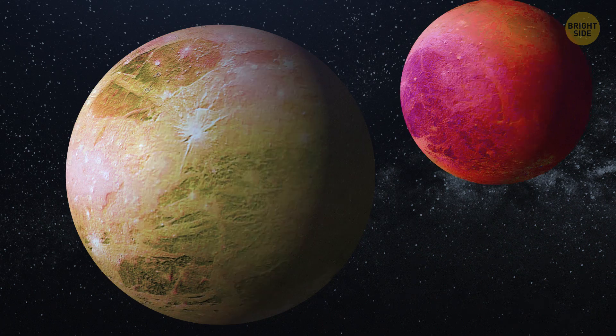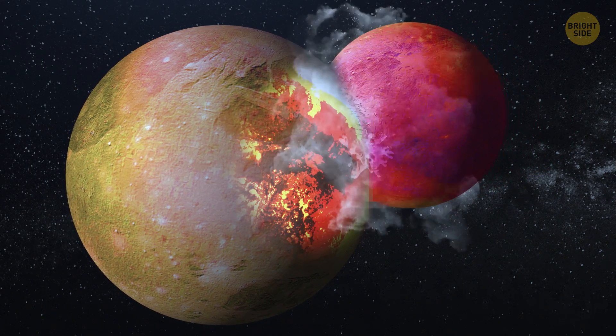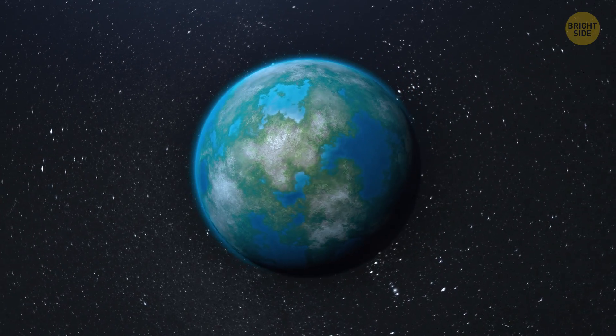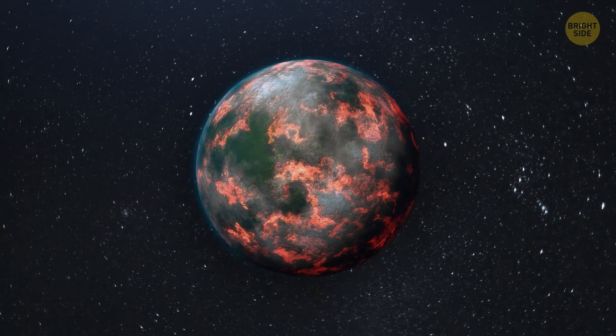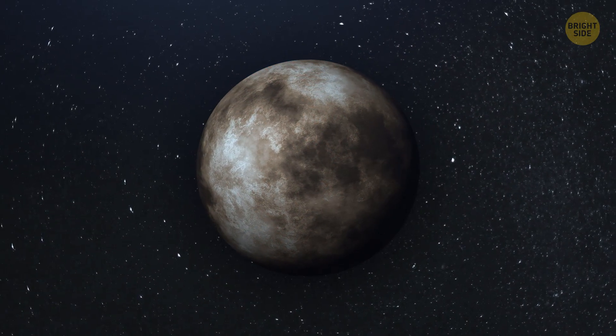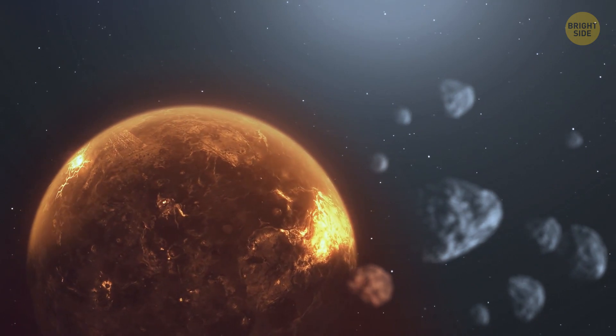When two rocky planets collide, they usually fuse to create a bigger world, like two drops of water joining together. Because of the impact, the unfortunate survivor turns into an ocean of lava for a few million years, before cooling down again to become solid rock. The new fused world could be made of entirely new kinds of rocks and chemicals.